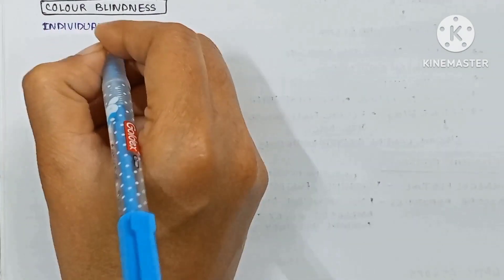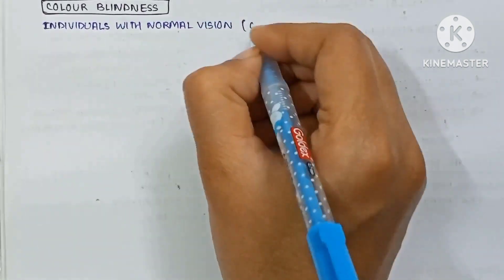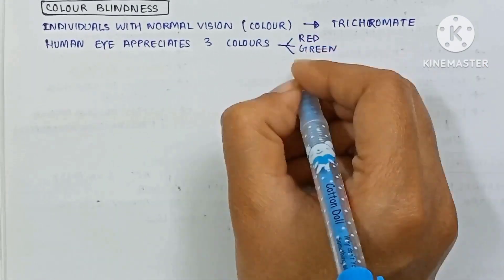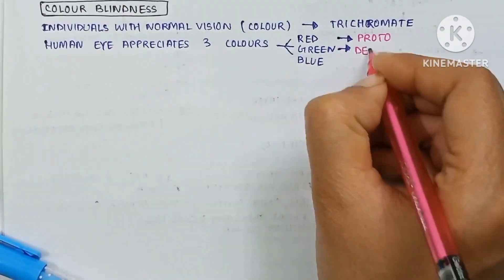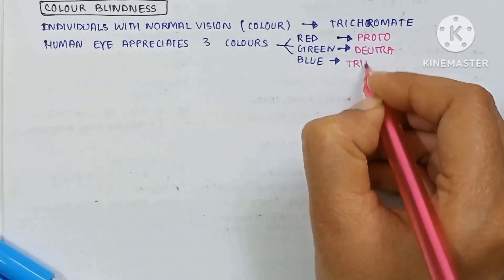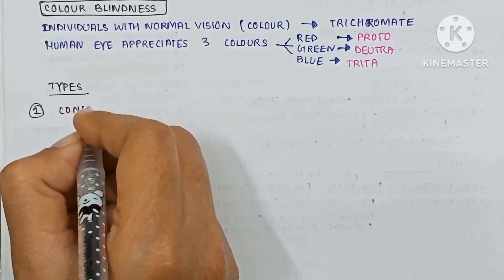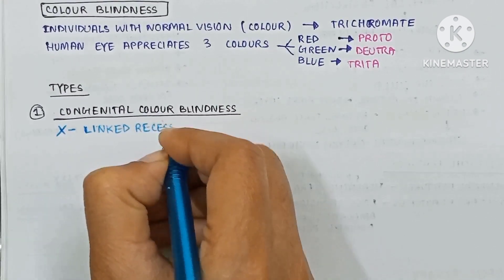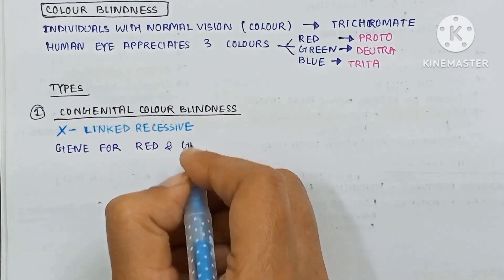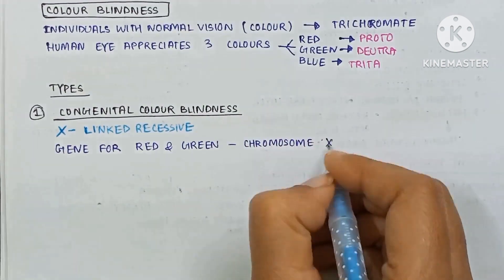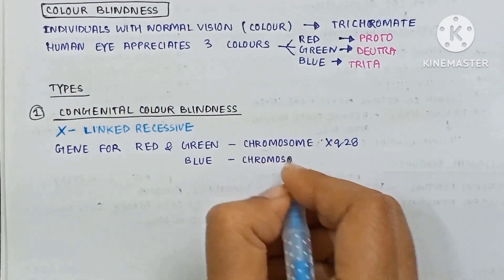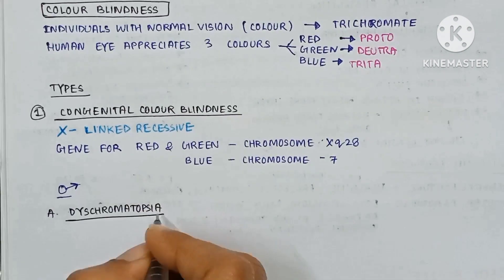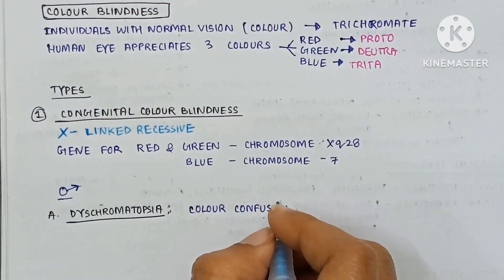The next and important part is color blindness. Individuals with normal color vision are known as trichromats. The human eye can appreciate three colors: red, green, and blue — that is protan, deutan, and tritan. The types of color blindness: first is congenital color blindness, which is X-linked recessive. The gene for red and green is present on chromosome Xq28, and blue is on chromosome 7. It is most commonly found in males.